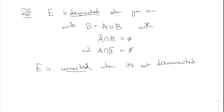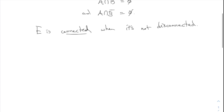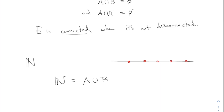This is the definition we had from last time. For example, consider the natural numbers N. If you draw a picture, it looks like a bunch of isolated dots. Is N connected or disconnected? Disconnected, yes. Would anyone be able to tell me a separation — two sets whose union equals N and which have those intersection properties?